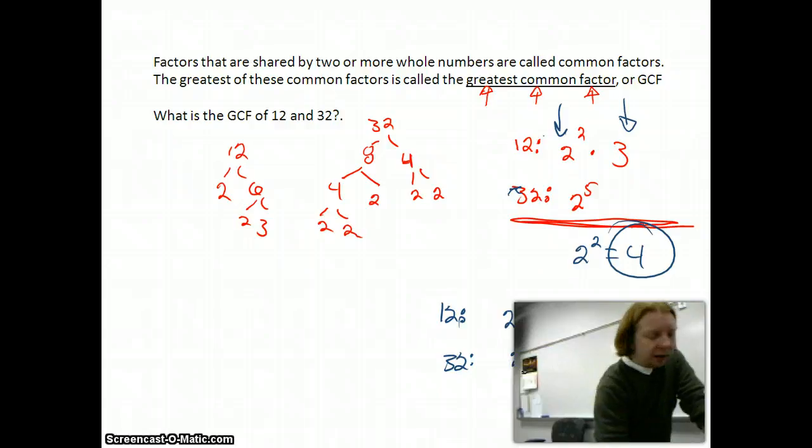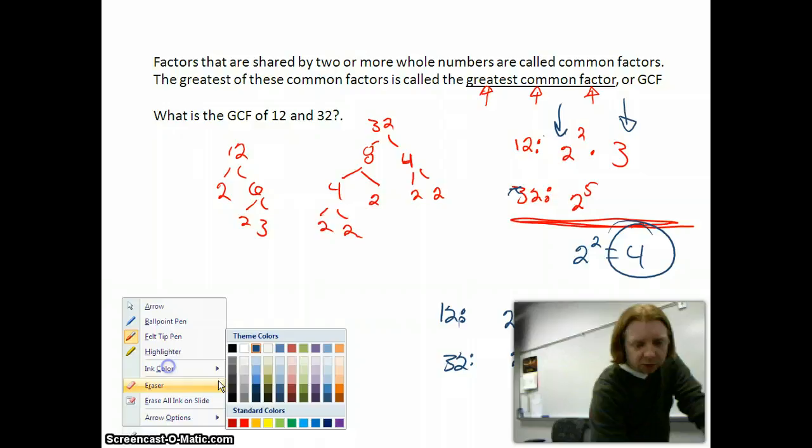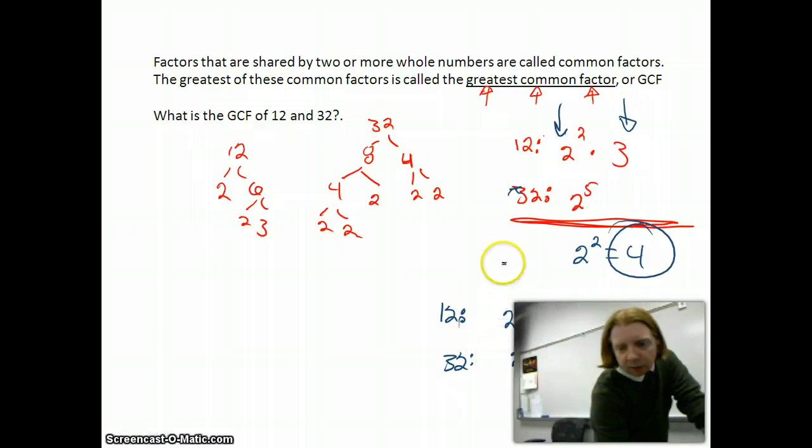So now I look to see what's the common factor between them. What numbers do they both have in common? The common factors between them... there's this 2 here. These 2's are common. So that means my common factor must be 2 squared, which is 4.